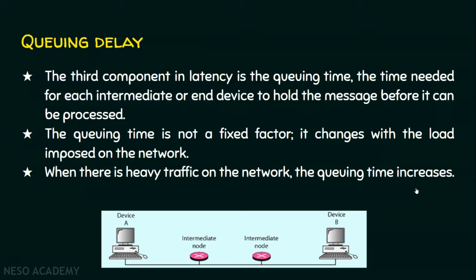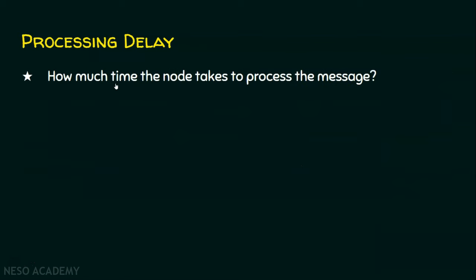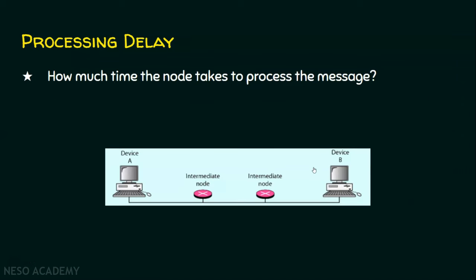We are done with transmission delay, propagation delay, and queuing delay. Finally, the processing delay. Processing delay means how much time the node takes to process the message. Suppose there is a sender and a receiver — when the message is sent or received, how much time this node takes to process the message is called as the processing delay. Generally speaking, processing delay and queuing delay are not taken into account for calculating latency. So latency mainly depends on the two important delays: transmission delay and propagation delay.